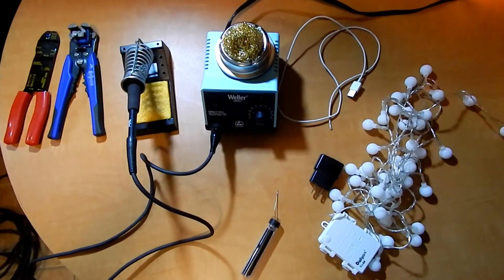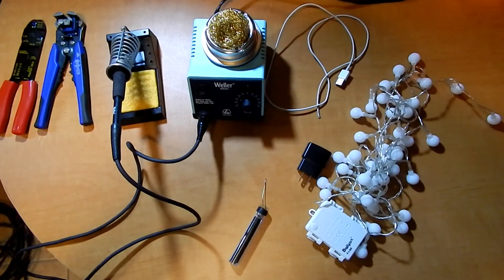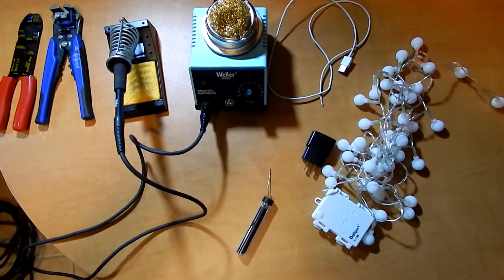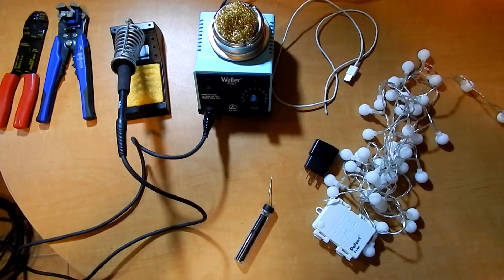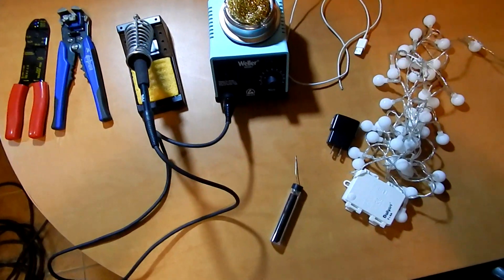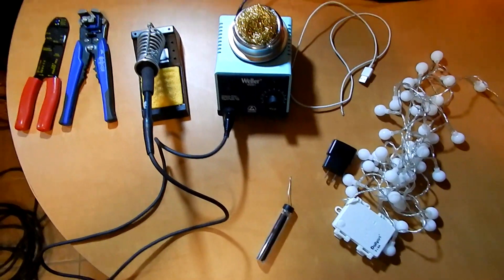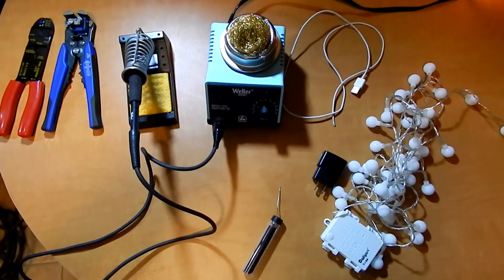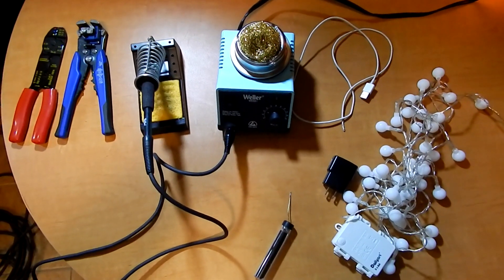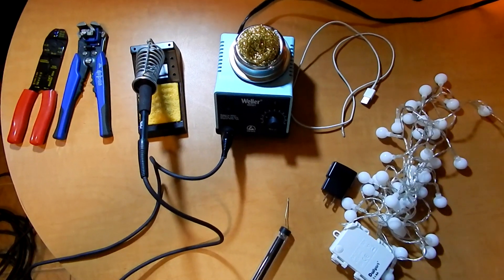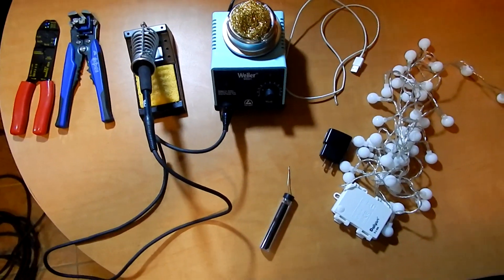So what you'll need is the lights that you have—these ones are 4.5 volt DC battery-powered lights—and I'll be using a 5 volt converter that will be plugged into the wall, which will give 5 volts DC to the lights themselves, which should be fine.